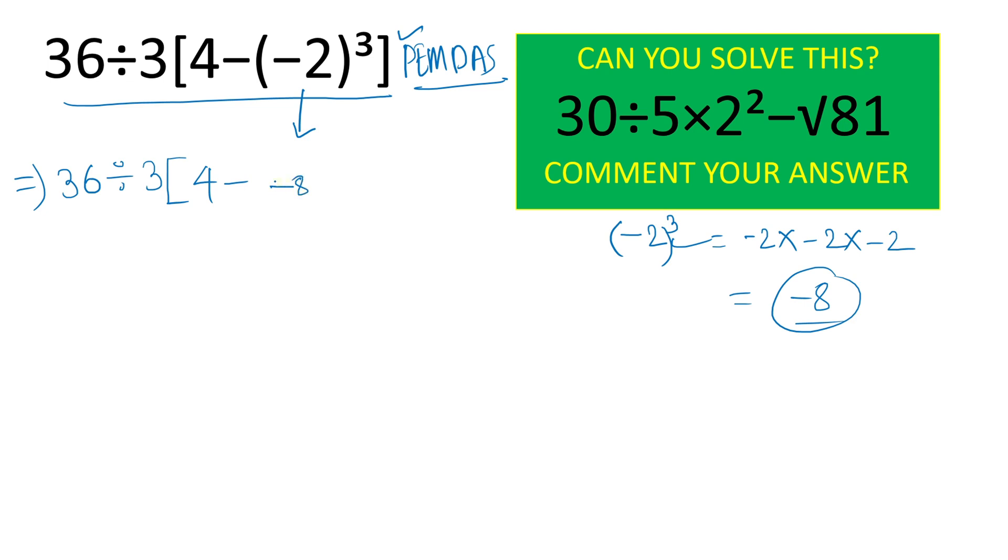So we will simply write minus 8 here like this. Now, 36 divided by 3, this is nothing but a multiplication. So we will write minus minus that is plus. So 4 plus 8 here.